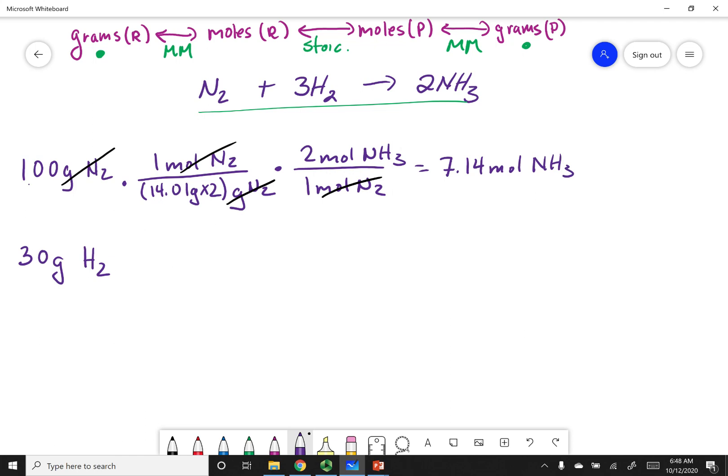Let's do the same for hydrogen. I'm going to multiply by its molar mass, 1.008 times 2 grams of hydrogen gets me one mole of H2. Now I can look at the stoichiometric coefficients. For every three moles of hydrogen, I make two moles of NH3. Cancel units out, and I get 10.0 moles of NH3.